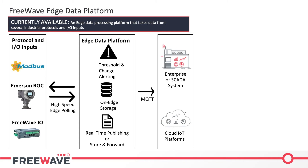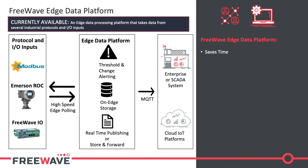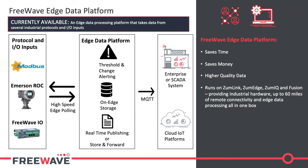This saves you time because it's easier to set up and saves time in reporting data automatically instead of having to drive out and collect data. It saves you money potentially because you're increasing productivity or not getting fined for lack of data in your reports. And it provides higher quality data to feed your analytics and business operations. It runs on FreeWave's industrial hardware, so you can get the hardware, our connectivity over the 900 megahertz network, and that edge data processing all in one box from a single source.